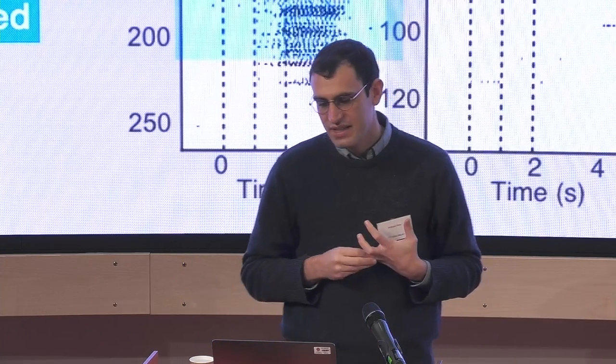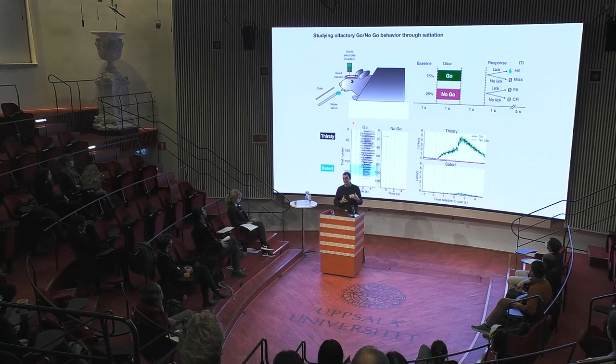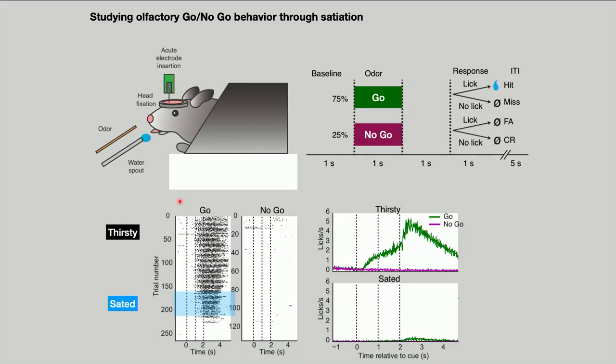I applied this technique to understand thirst-motivated behavior with a head-restrained mouse, inserting the electrode into different parts of its brain as it performed a task consuming water gradually. Water-deprived at the beginning, it would consume water over time, gradually become sated, and stop performing the task. The question was: what's happening in their brain when they're thirsty and willing to do this arbitrary task — smelling a cue and seeking water — and what's changing as they consume water and eventually stop responding to the same cue?